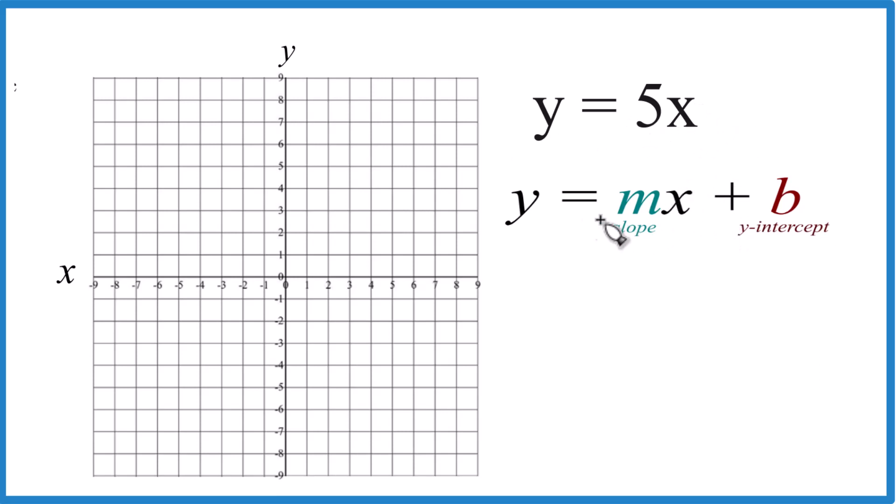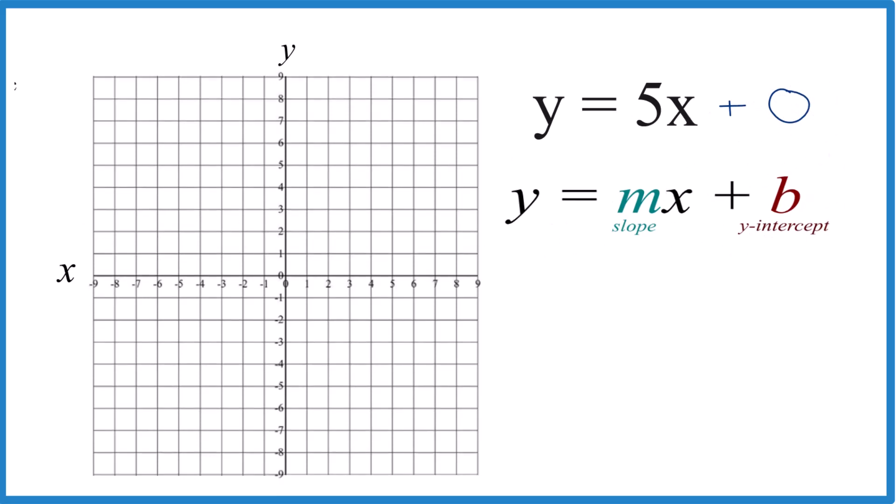So y equals 5x. We have the slope-intercept form y equals mx plus b, but we don't have b up here. So we could just say 5x plus zero. Now we have b. Zero is the y-intercept.